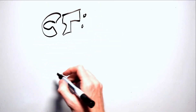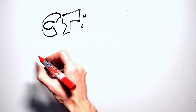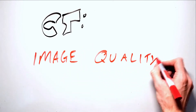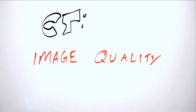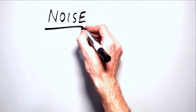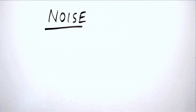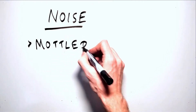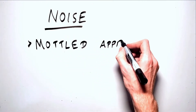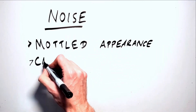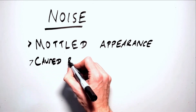Before diving into image quality in CT, we need to discuss one of the enemies of image quality, which is noise. Noise is seen in an image as a grainy, mottled appearance. It can be caused by many factors, but in this context noise is primarily composed of quantum noise, or quantum mottle, which is simply the result of an insufficient amount of signal in our data.